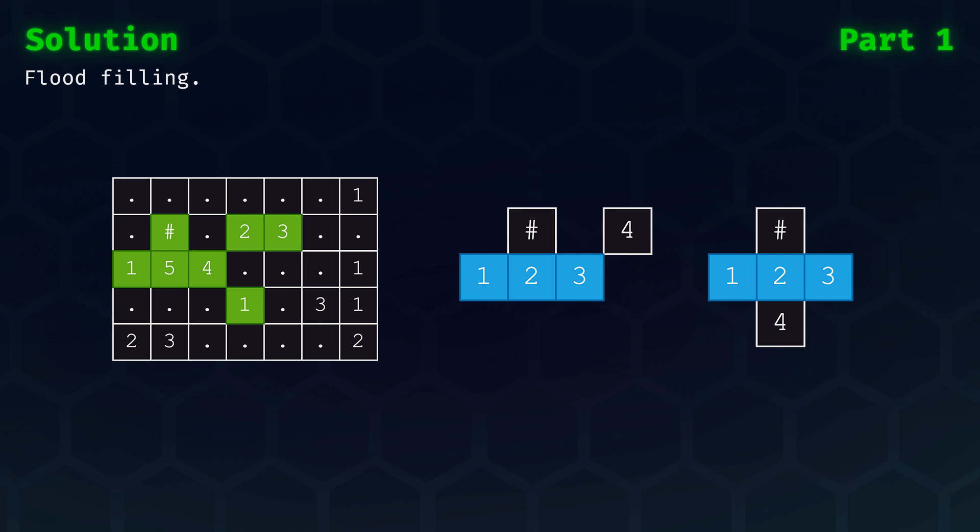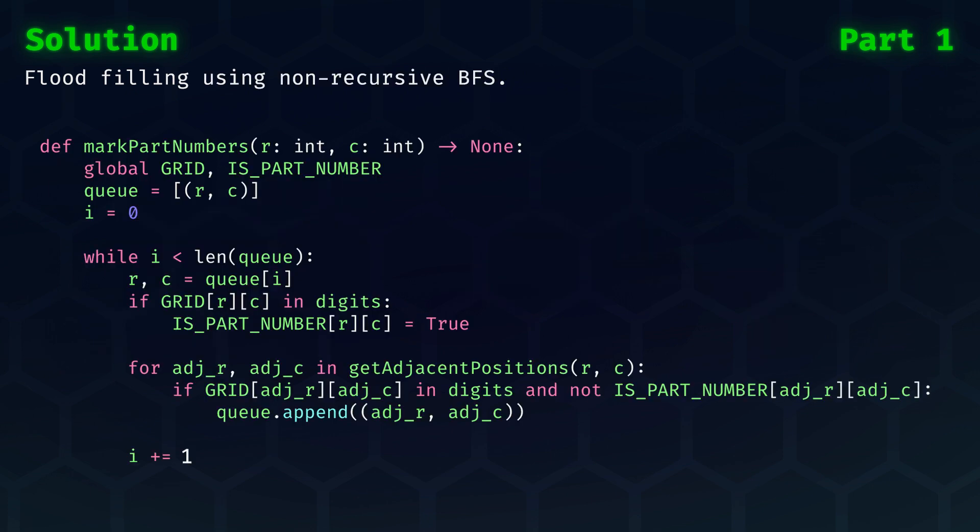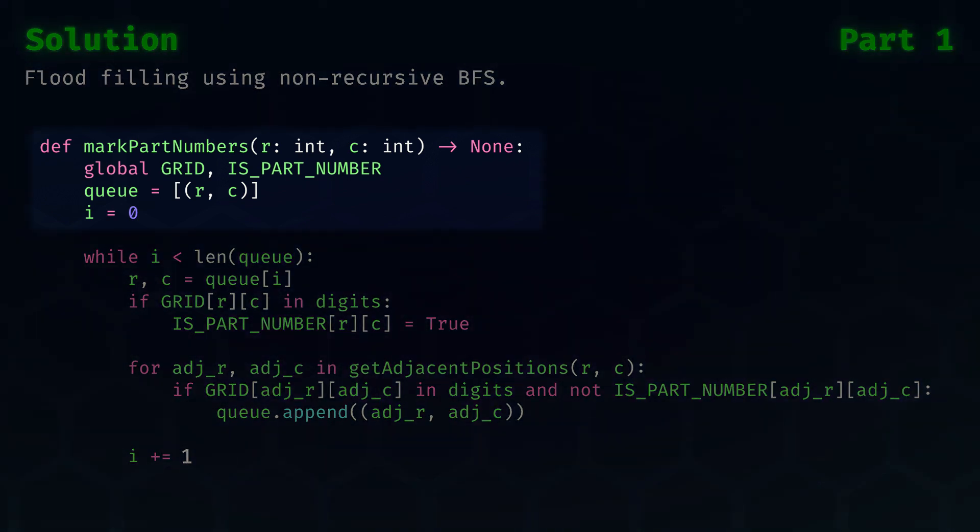One thing to note about today's input is that after analyzing it, it seems that at no point we will have part numbers touching as shown in these blue examples. So we won't have to worry about this edge case where, theoretically, we could flood fill into numbers that are technically not adjacent to symbols. Now, for the actual algorithm, let's do it non-recursively. We create a queue in which we put the first position, and we will keep track of the index of our current queue item, thereby simulating first-in-first-out behavior.